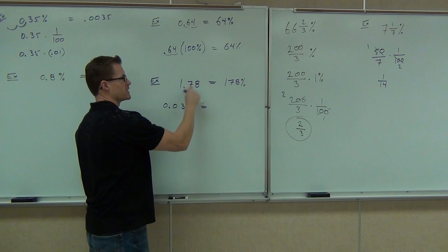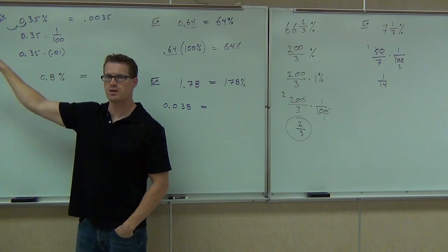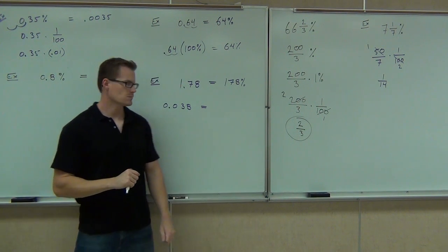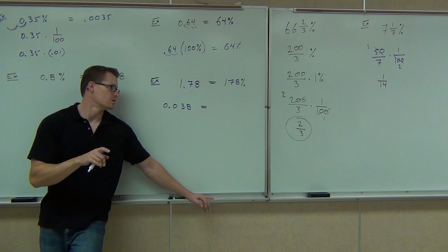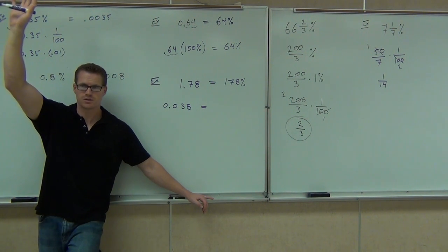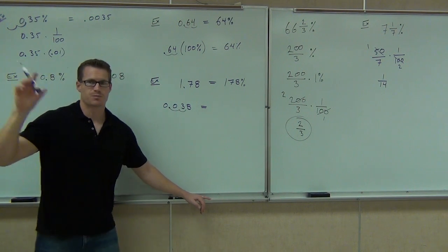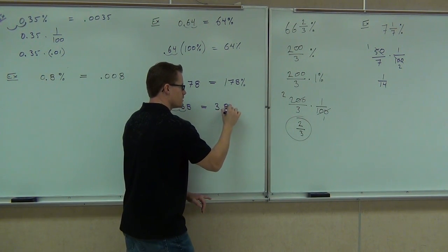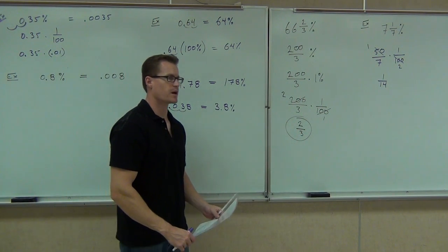When you're changing a decimal to a percent, you're moving it to the right. When you're moving a percent to a decimal, you're moving to the left. It's whether you're dividing by 100 or multiplying by 100 — that's the difference. If you don't have a percentage, you're trying to change it into one, so you're multiplying by 100, moving two spots to the right, and you get 3.8%. It's always two spots — it's always by 100.